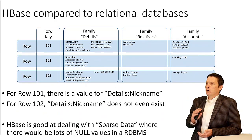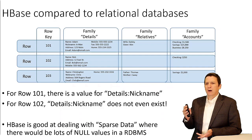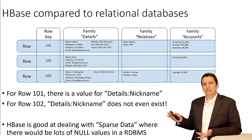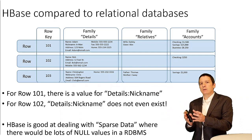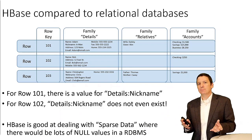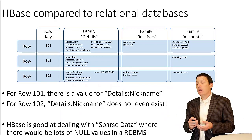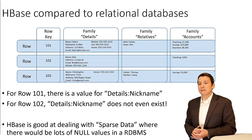For example, row 101 has a value for 'nickname' for this individual, while in row 102 that attribute 'nickname' doesn't even exist. This would violate all kinds of principles in a relational database system, but this is exactly what HBase is intended to do.